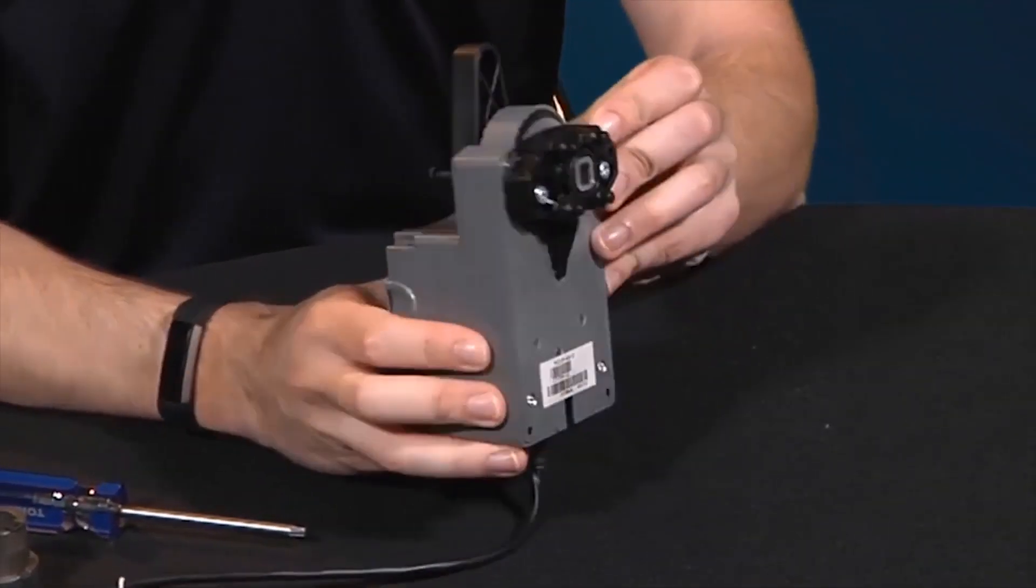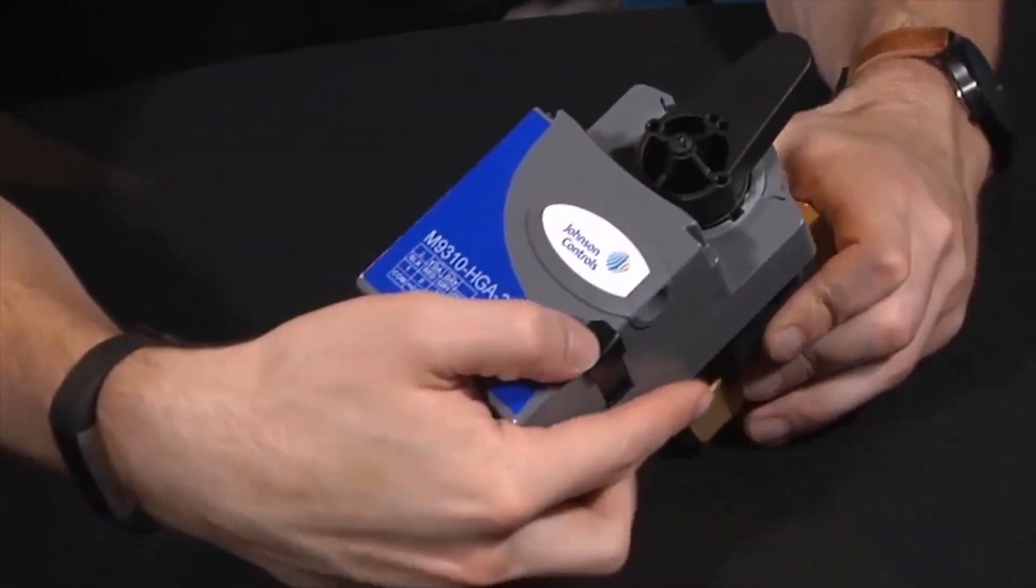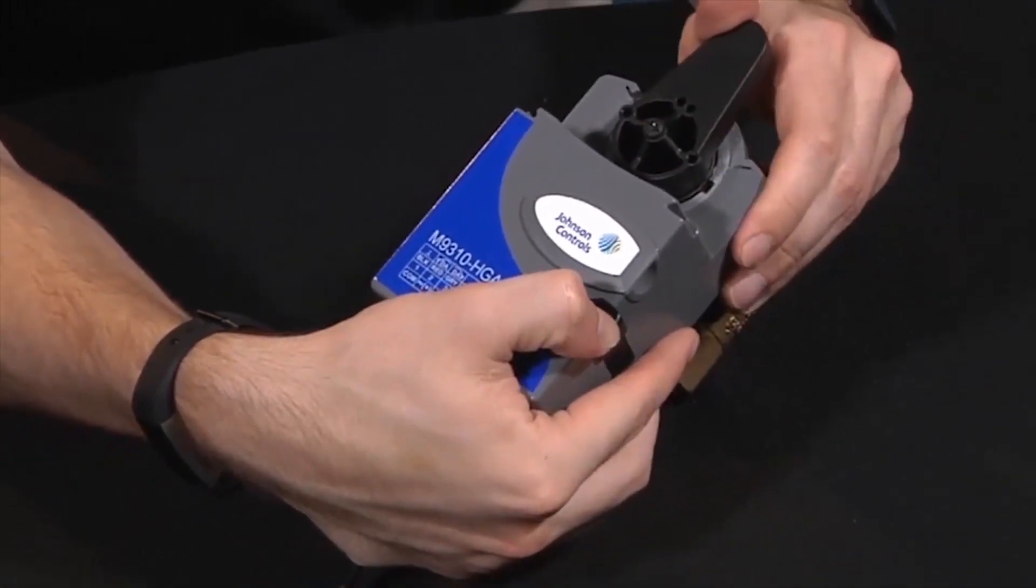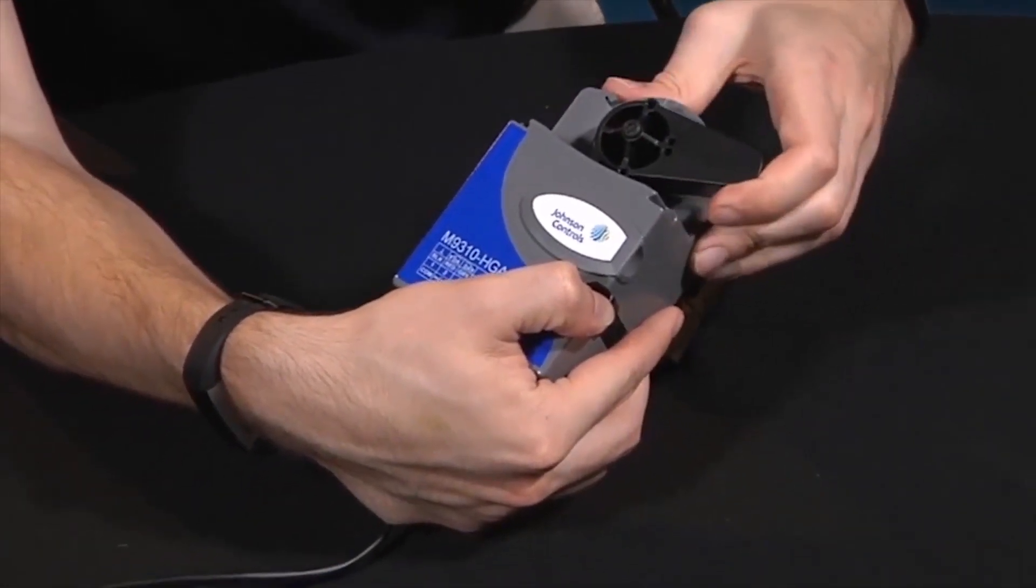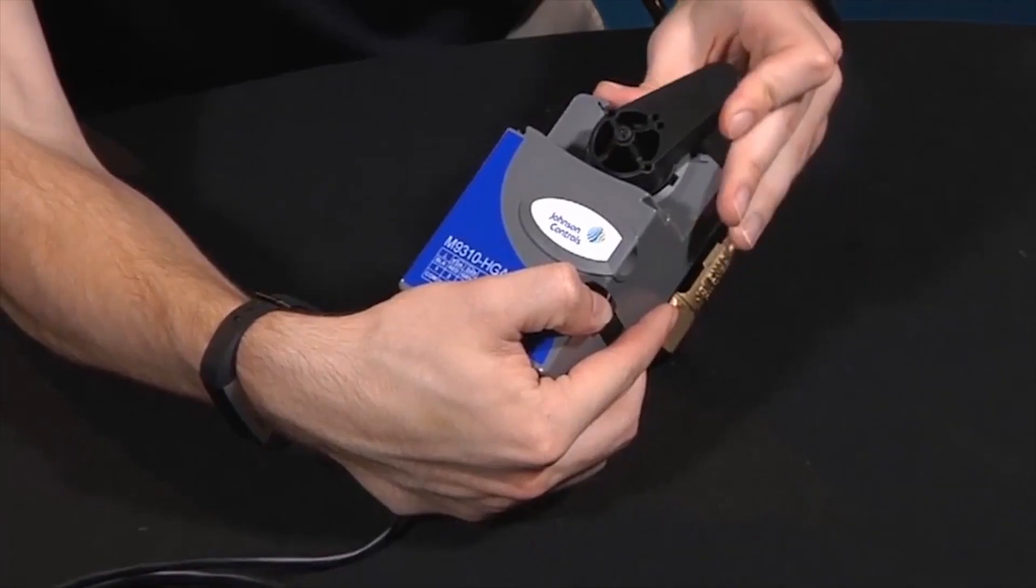You'll want to test that the actuator can rotate without binding. To do this, firmly press the clutch release button and rotate the actuator back and forth. And that completes the conversion.